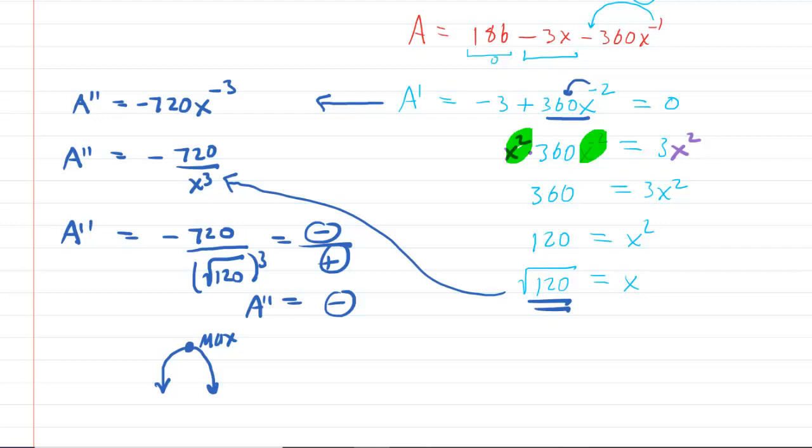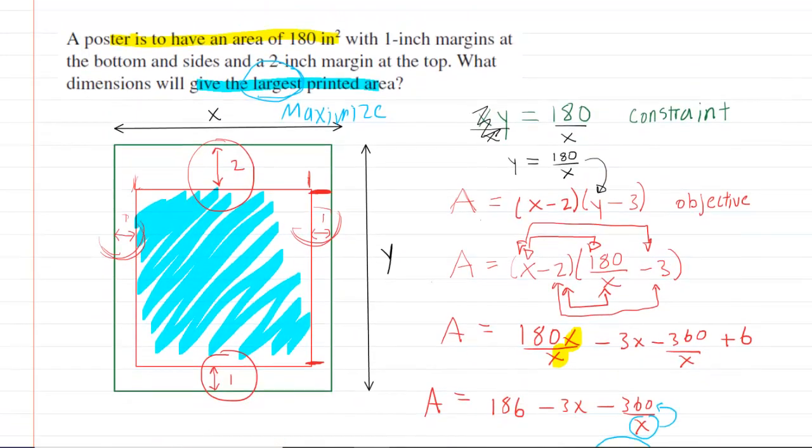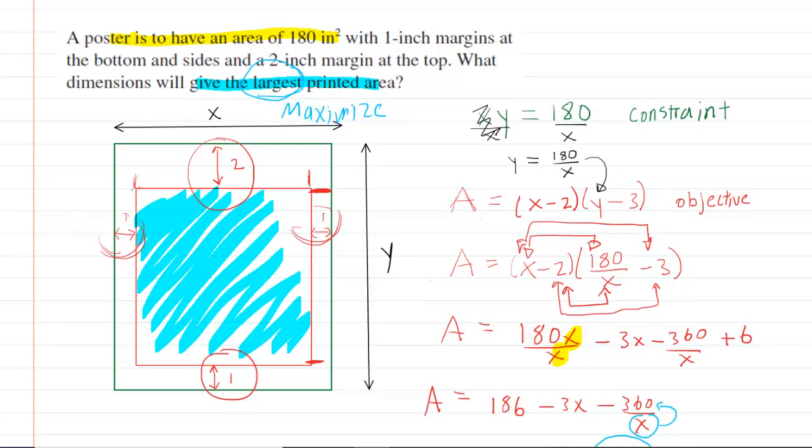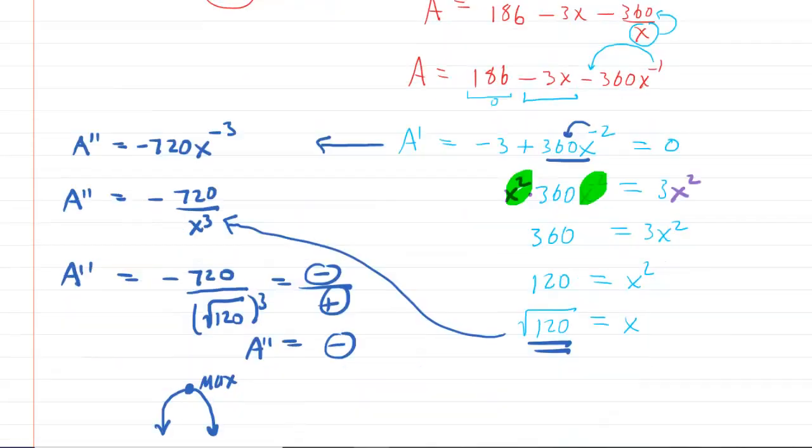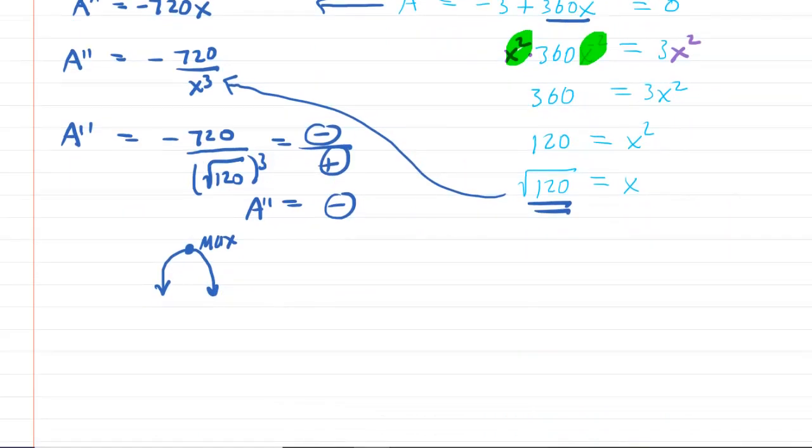So we actually have the X value of our poster. Go back to the picture and that was basically the width of the overall poster that we labeled X. We also need to pick up the Y value.